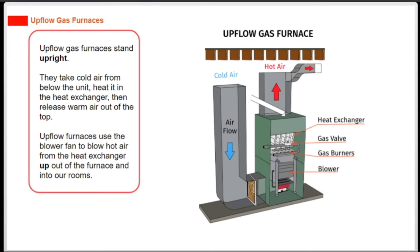Upflow gas furnaces stand upright. They take cold air from below the unit, heat it in the heat exchanger, then release warm air out of the top. Upflow furnaces use the blower fan to blow hot air from the heat exchanger up out of the furnace and into our rooms.